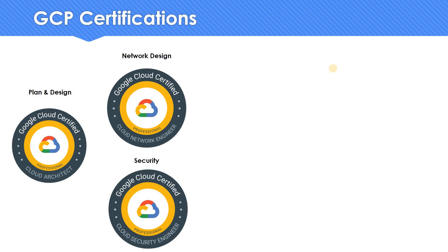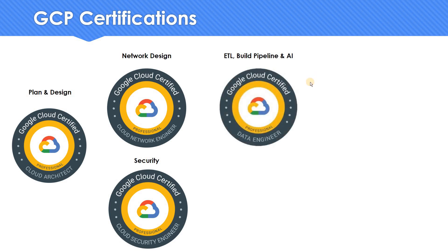Now the foundation is very strong. The next step: the reason why most organizations move to cloud is they want some kind of optimized ETL process, optimized pipelines, and to be more robust, they need some kind of AI capability. So to build an ETL pipeline or AI-based system, you definitely need a data engineer. That's where Professional Cloud Data Engineer comes into picture.